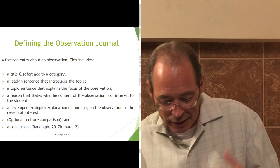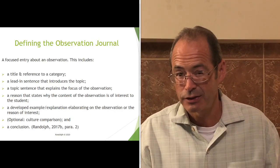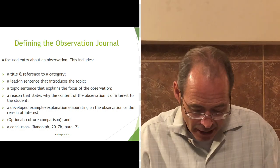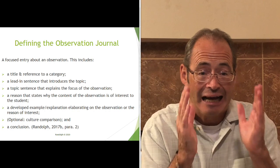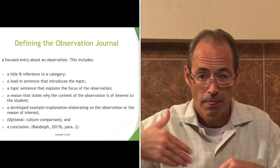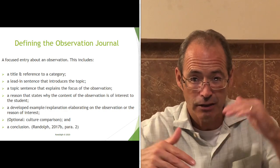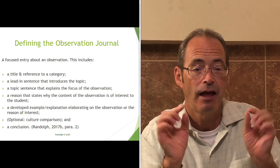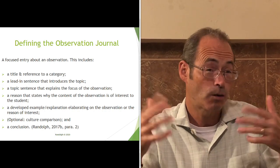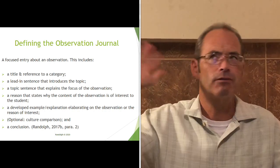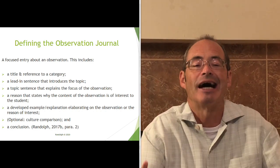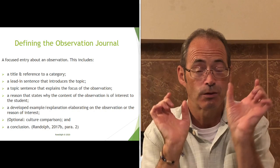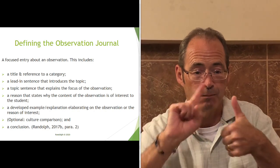So what are these observation journals? It's really a focused entry about an observation. It includes: a title and reference to a category; a lead-in sentence that introduces the topic; a topic sentence that explains the focus of the observation; a reason that states why the content is of interest to the student — what was that 'wow' moment that pulled them in; and a developed example or explanation elaborating on the observation. I found it really important that students title the observation and give a reference to a category, because when I just said 'write on anything,' that didn't work.